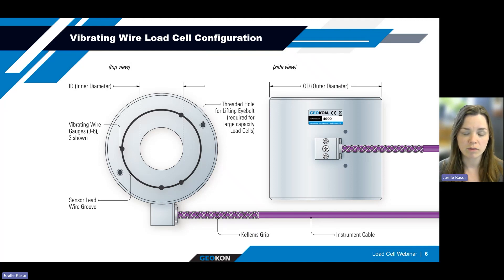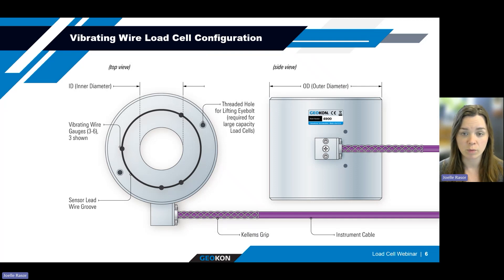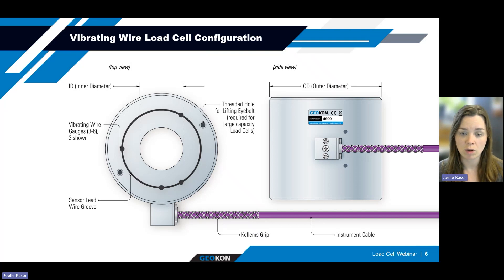Readings are taken from each strain gauge and are averaged. These readings can be used in conjunction with the calibration factor to calculate the applied loads. The vibrating wire load cell is provided with an integral thermistor for monitoring temperature. If the load cell will be installed where it will experience varying temperature, it is recommended that temperature corrections be applied to the final calculations. The dimensions of the vibrating wire load cell will vary depending on the required capacity, and these load cells are typically manufactured to order. Depending on the size, it can be provided with threaded holes for lifting eyes on top.